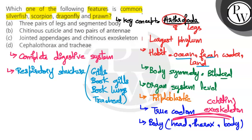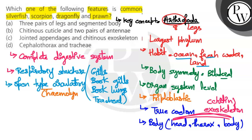The circulatory system in Arthropoda is of the open type, meaning blood flows into the body cavity and bathes the organs directly. The fluid is called haemolymph, and it is not red in color.